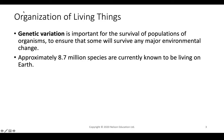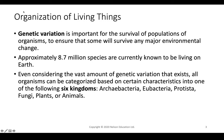There are currently approximately 8.5 million species known to be living on Earth, and they are all subdivided into six kingdoms: archaebacteria, eubacteria, protista, fungi, plants, and animals. For the purposes of this semester, we will be focusing mainly on animals, specifically on one animal — the Homo sapien.